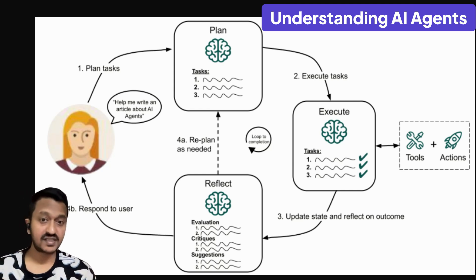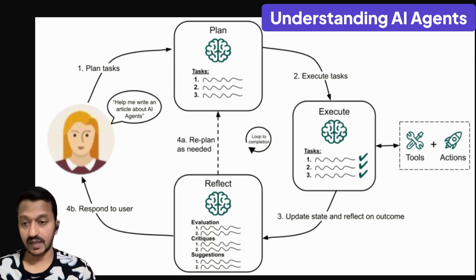the agent starts executing the tasks one by one using the appropriate tools. It can be tool calling, API calling and all that. So it calls any tool whenever it is required to complete the tasks.